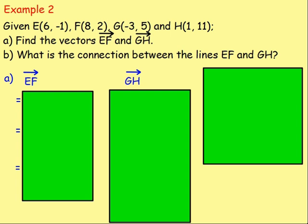Example 2. Given E is the point (6, -1), F is (8, 2), G is (-3, 5), and H is (1, 11). Part A, find the vectors EF and GH. And part B, what is the connection between the lines EF and GH? Let's find out.